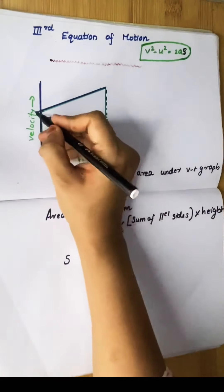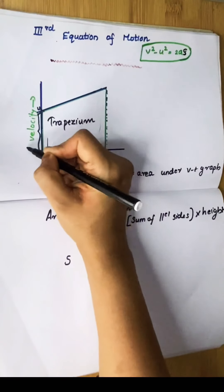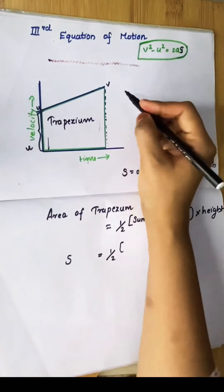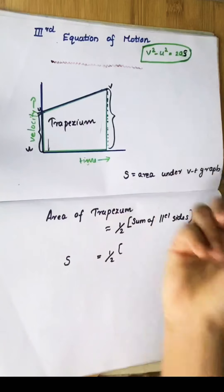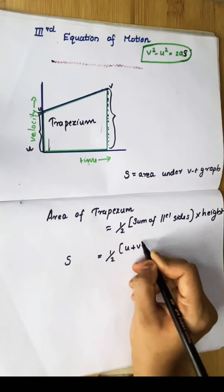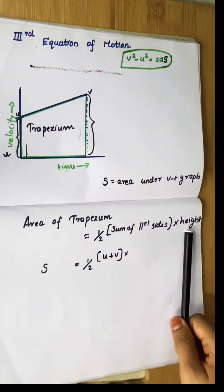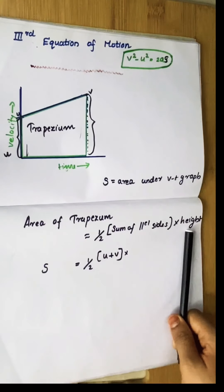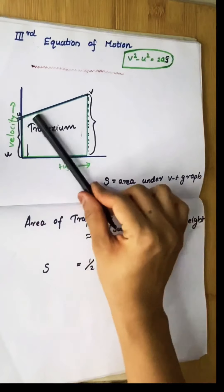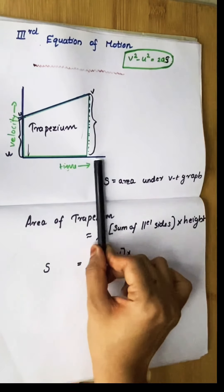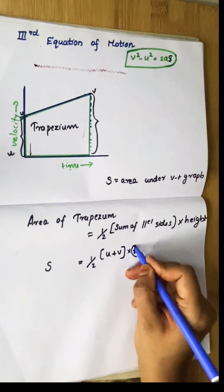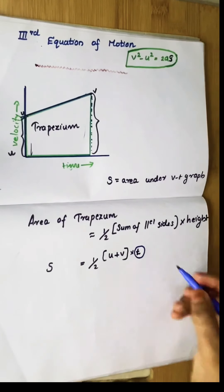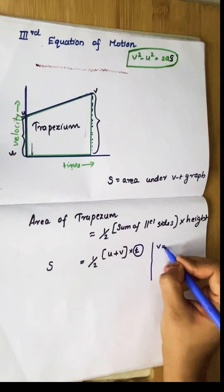The parallel sides here represent initial velocity u and final velocity v, so their sum is u plus v. The height of the trapezium is time t, since the height is the horizontal base of the slope. So s equals half into (u plus v) into t.